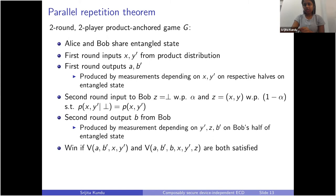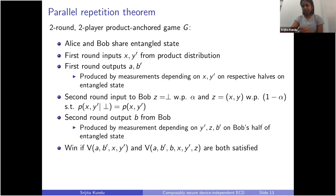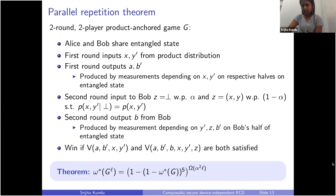The winning condition of the game has two separate parts: they have to win some condition on the first round involving A, B', X, Y' — some predicate — and for the second round output it's some predicate that depends on all the inputs and outputs. The theorem we prove is that the winning probability of L parallel copies of this game — if the winning probability of one round is omega — is at most (1 - (1 - omega)^5) raised to a quantity that decreases in L.